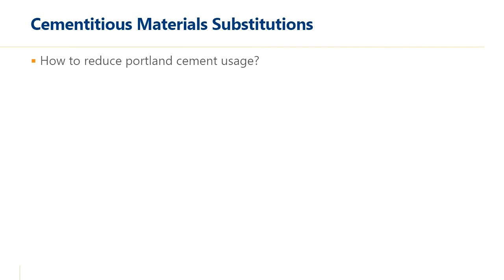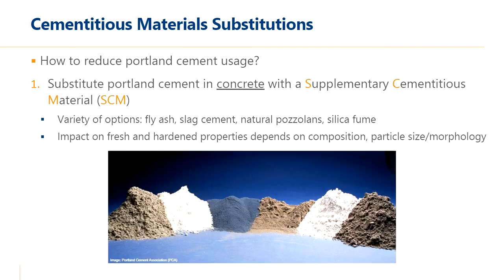There are three primary ways to reduce Portland cement usage. The first, done for decades, is to substitute a portion of Portland cement with a supplementary cementitious material (SCM). Some SCMs are byproducts from other manufacturing processes, making them even better from a sustainability perspective — for example, fly ash and slag cement. There are also naturally occurring materials like natural pozzolans, and manufactured materials like silica fume. The impact of these materials varies depending on their chemical composition, physical particle size, and particle shape or morphology.